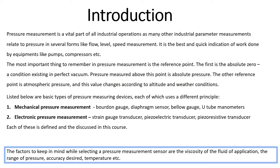Pressure measurement is a vital part of industrial operations. Like other industrial parameter measurements such as temperature, pressure is used in other measurement systems like flow, level, and speed, and it is one of the best and quickest indications of work done by pumps and compressors.